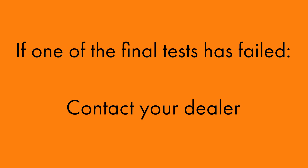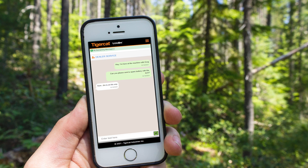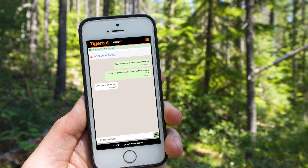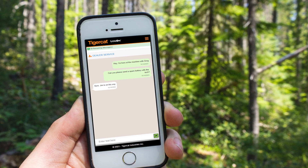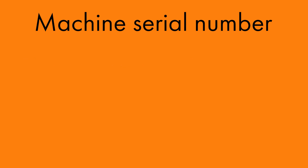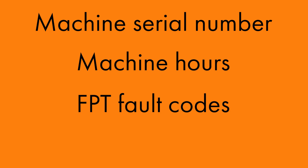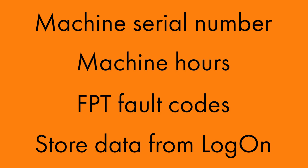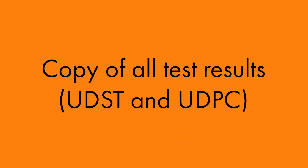If one of these final tests has failed, contact your dealer. If you are out of cell range, you can use the messaging feature to make initial contact with the dealer. When contacting the dealer, please have the following information ready: machine serial number, machine hours, FPT fault codes, stored data from Logon, and a copy of the test results from all UDST and UDPC tests performed during this troubleshooting procedure.